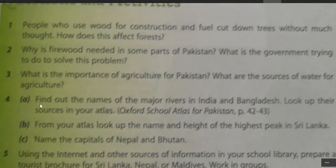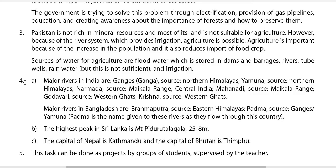Question number four, part A: Find out the names of the major rivers in India and Bangladesh. Look up their sources in your atlas — Oxford School Atlas, page numbers 42 and 43. The answer of question number four, part A — major rivers in India are: